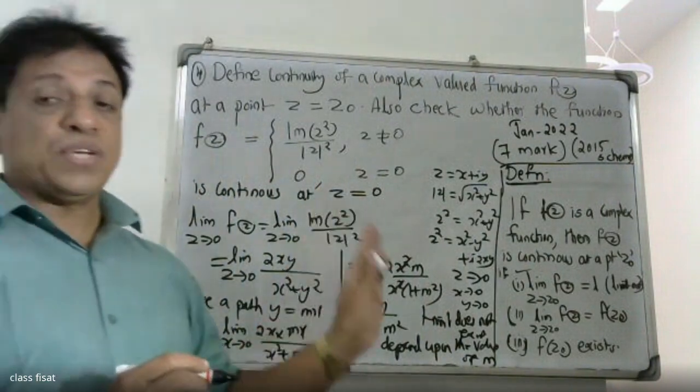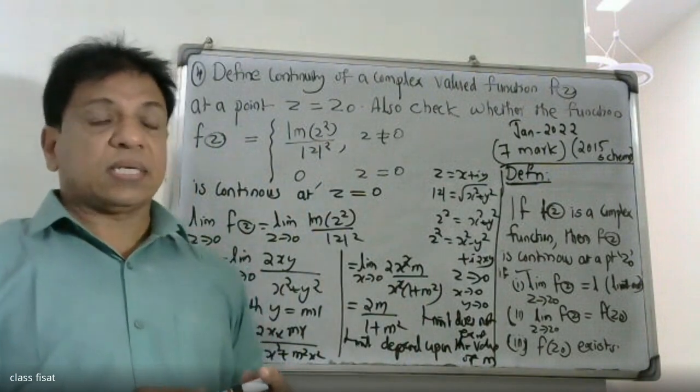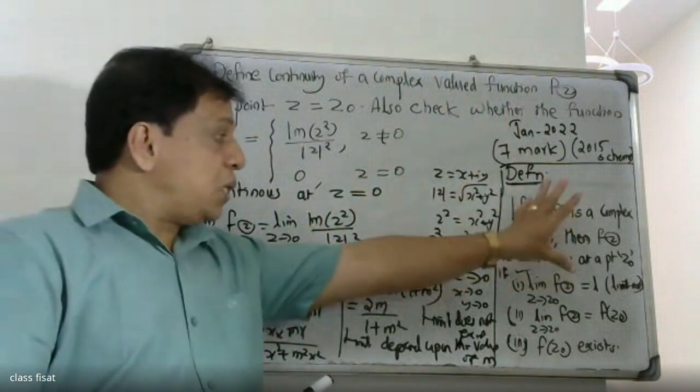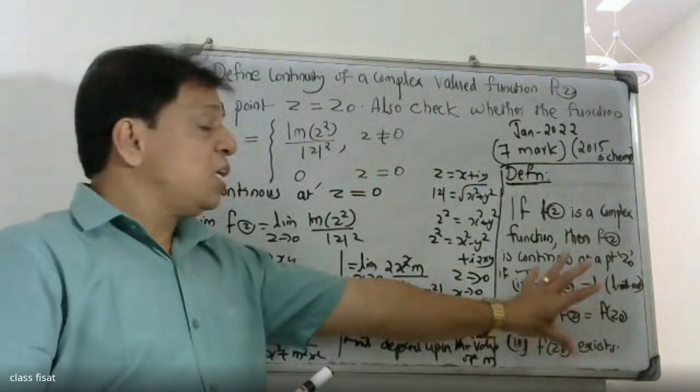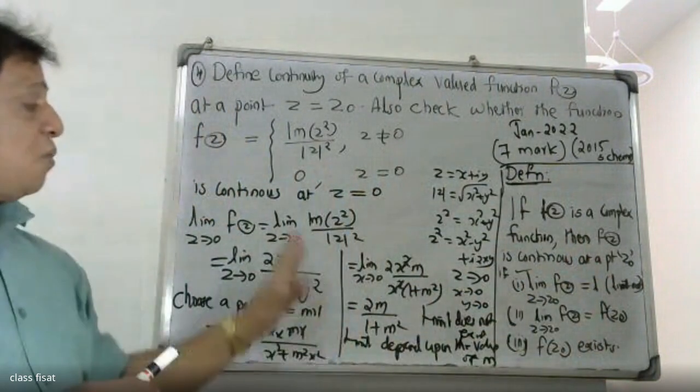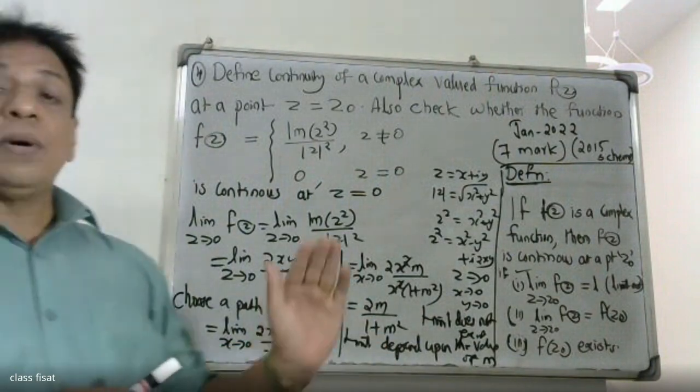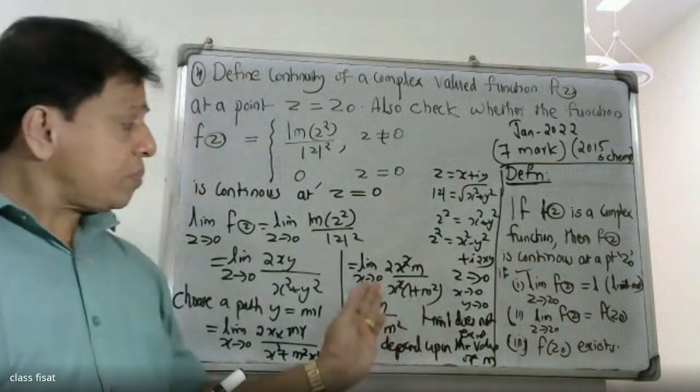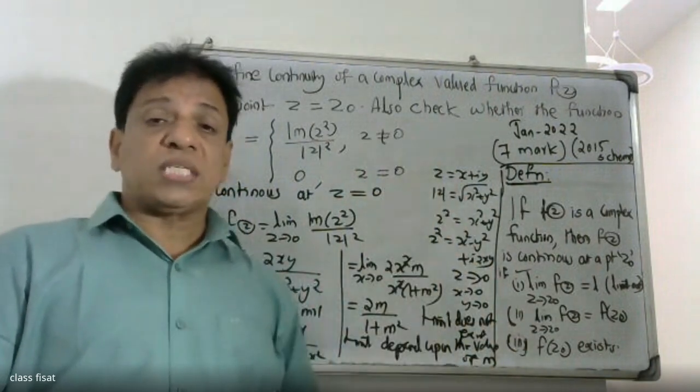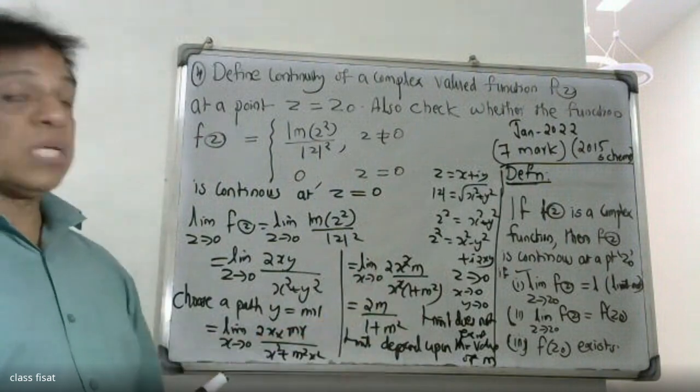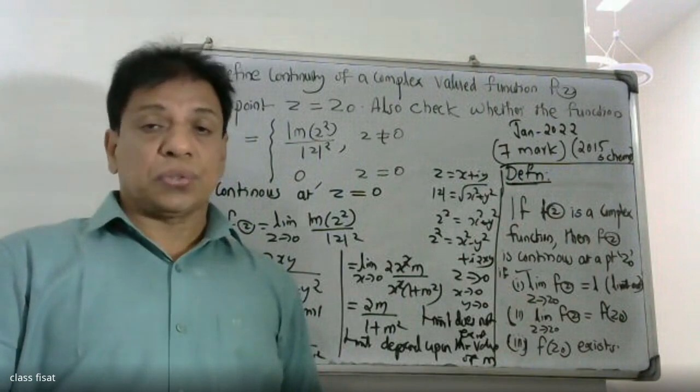Therefore, the given complex function f of z is not continuous at z equals zero. So the function is not continuous at the origin. This completes the problem on continuity versus differentiability.